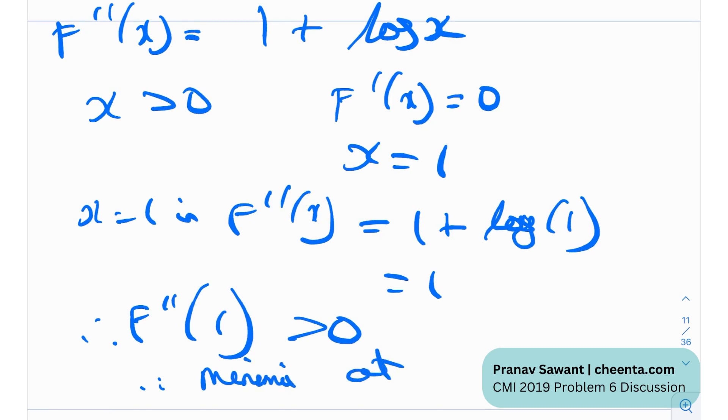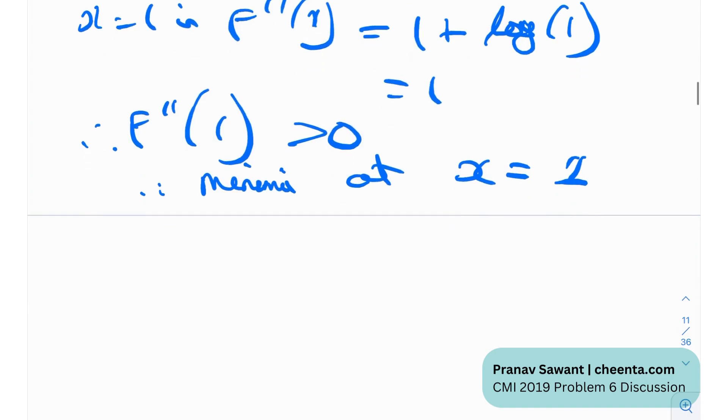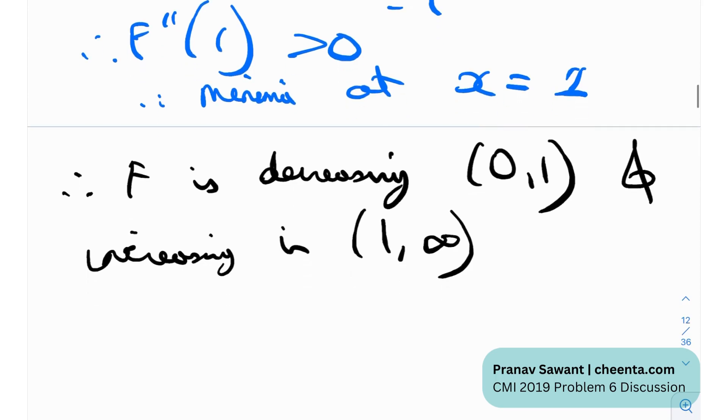We have a minima at x equals to one and now we are more or less completed. We can just define the range. So therefore I can conclude that f is decreasing on the interval zero to one and increasing in one to infinity. So we have defined the interval and also we have to define a little bit of the minima and the maxima.